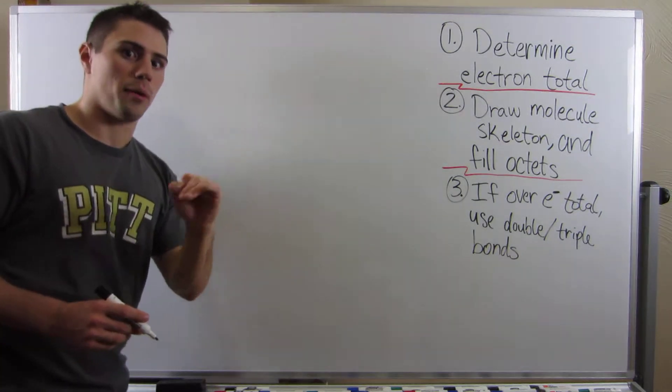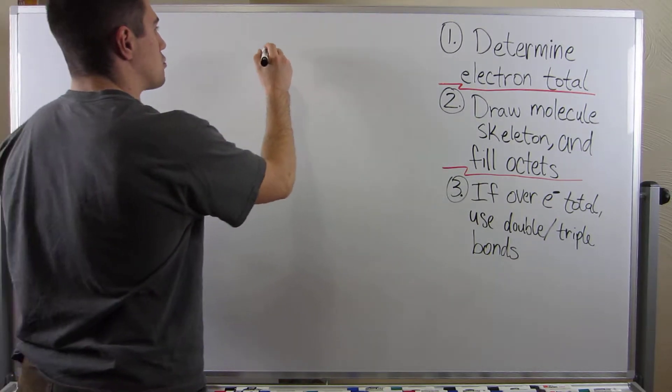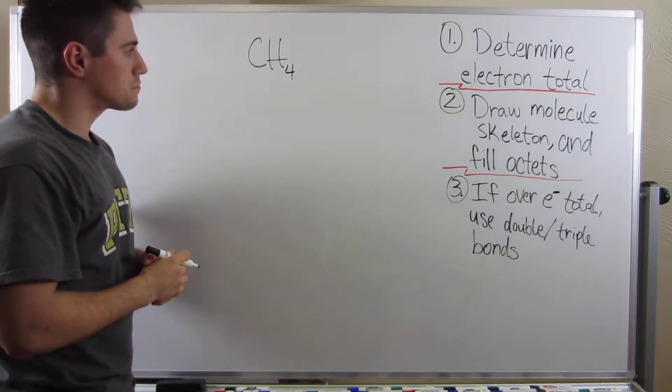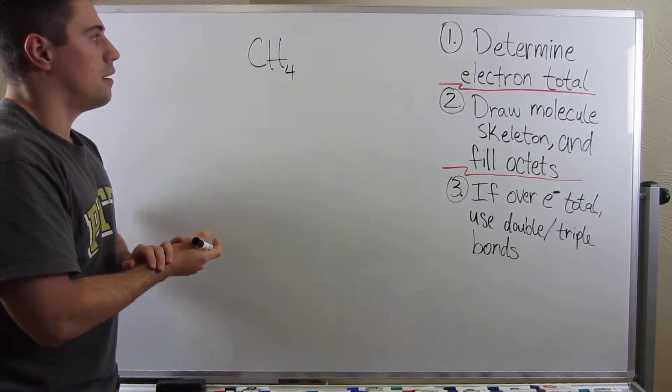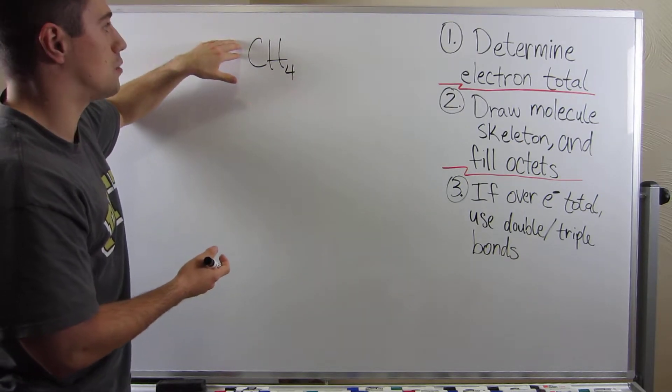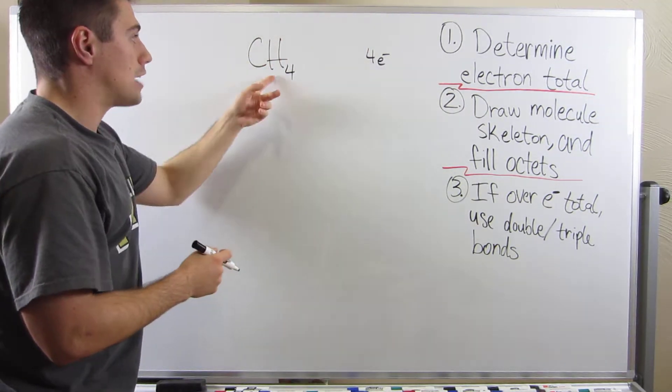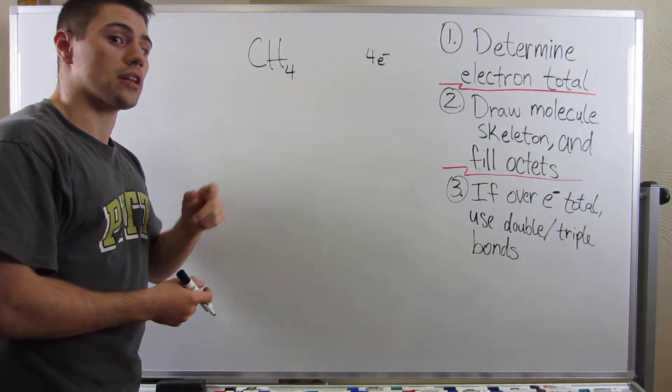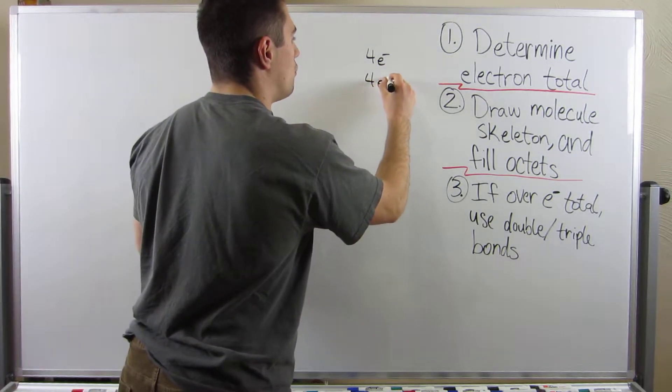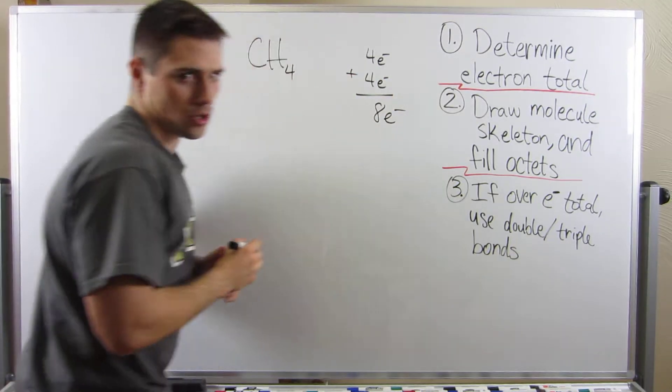We're going to do three problems. Don't worry, I have plenty of practice for you guys in the worksheet. Let's draw methane first. I don't have a periodic table up here for you guys, but carbon is in the fourth column of the periodic table, so he brings four electrons to the table from his valence shell. Hydrogen in the first column brings one electron to the table, and since we have four hydrogens, that means we have four electrons for a grand total of eight electrons.